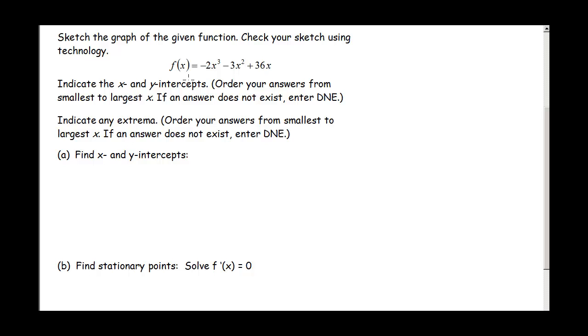Okay so here we are. This time our function is this polynomial here. And notice we don't have any interval. So we're supposed to find the extrema for the entire real number line. First we're going to find the x and y intercepts. Remember to find those x intercepts you set y equal to 0 and solve for x. So if we set y equals 0 we have 0 equals negative 2x cubed minus 3x squared plus 36x. Notice how there's an x in each term. So I can factor out that x.